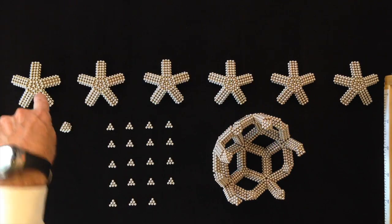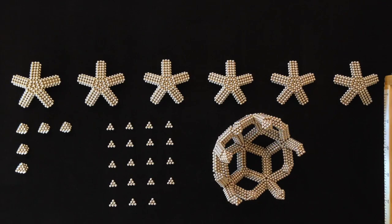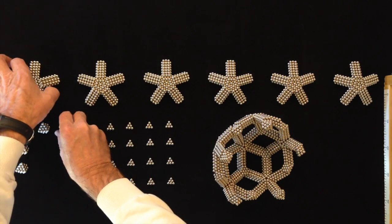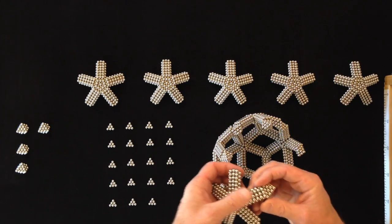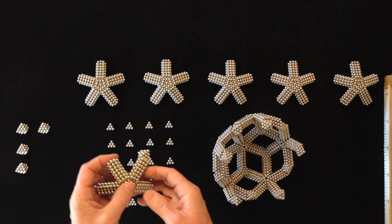Then I'm going to need five more to make this next layer. Each of these starfish will need one vertex attached.